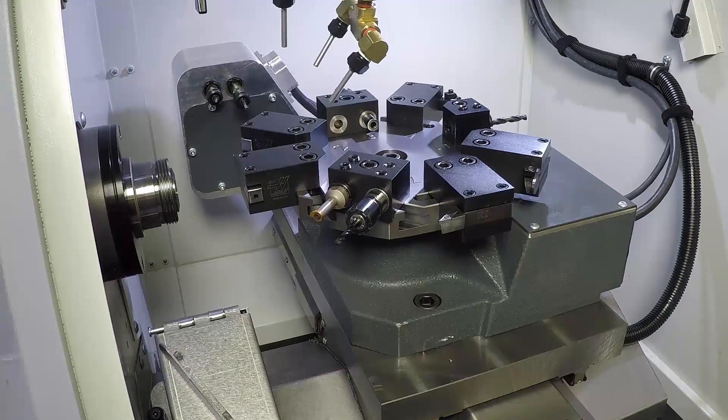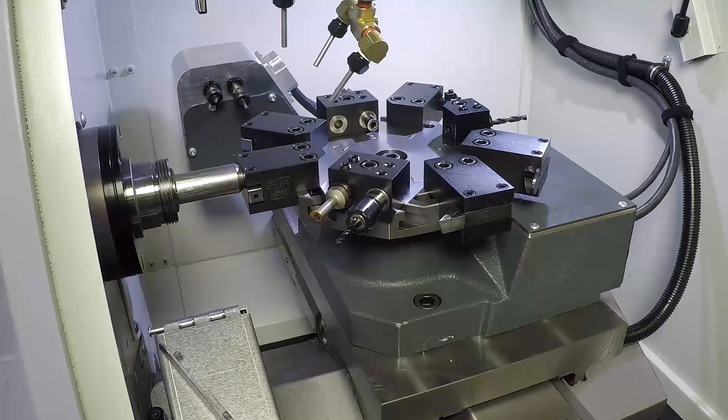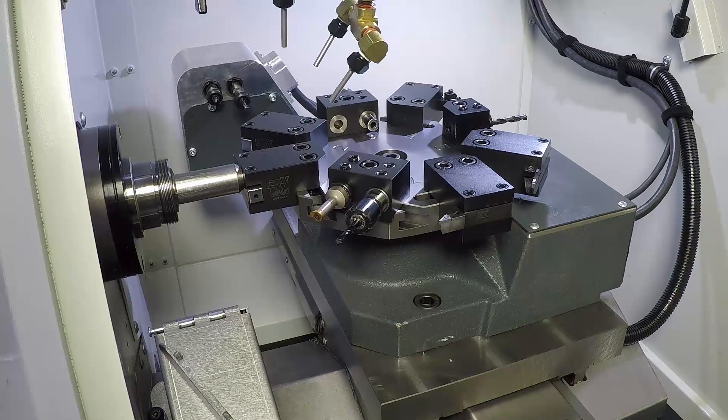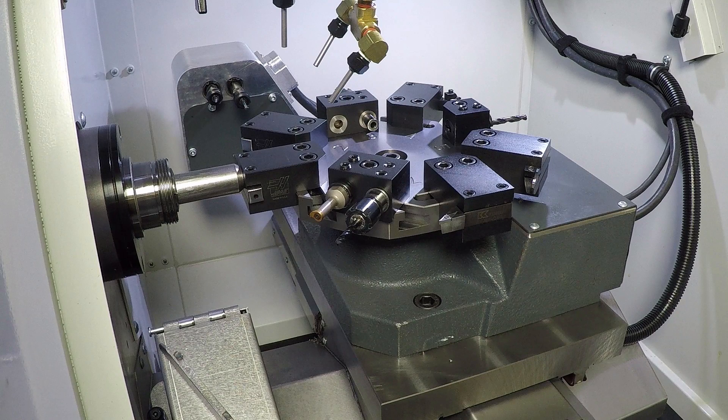The piston will push the bar until it hits a stop, so you will need a repeatable stopping surface like the face of a tool holder. The collet will then clamp the stock and the machining process will begin.